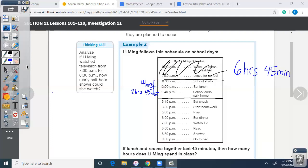But our question is asking us, if lunch and recess together last 45 minutes, then how much time does she spend in class? So we're going to subtract the 45 minutes of lunch and recess. So minus 45 minutes. This is a simple problem. What's 45 minutes minus 45 minutes? Nothing. So then we just bring down our six hours. Zero minutes. You can write that part if you want. You don't have to. It's just six hours is the answer to that problem.